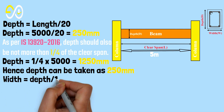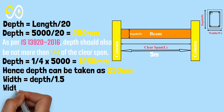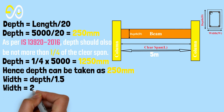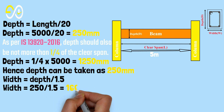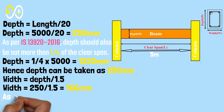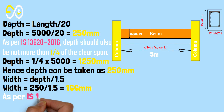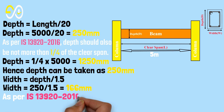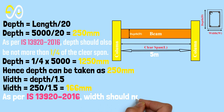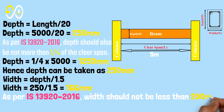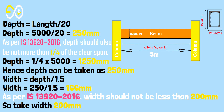Width equals depth over 1.5. Width equals 250 over 1.5, which equals 166 millimeters. As per IS 13920:2016, width should not be less than 200 millimeters. So take width as 200 millimeters.